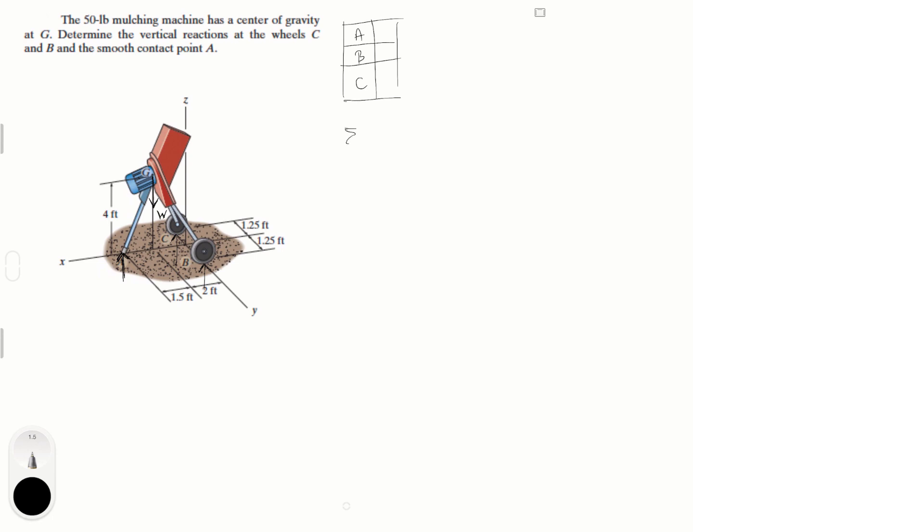The first obvious one is sum of the forces is equal to 0 and it is equal to A plus B plus C minus the weight. So, that means that A plus B plus C is equal to the weight which is equal to 50 pounds. Let's call this equation 1.